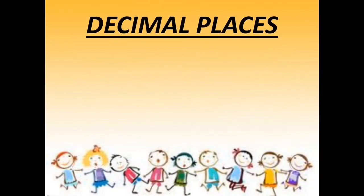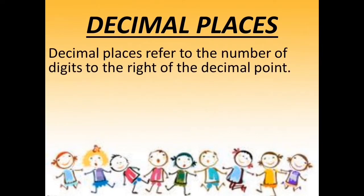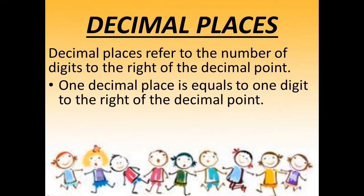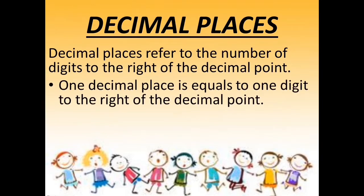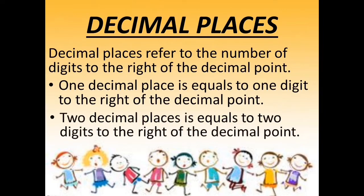Next is decimal places. Decimal places refer to the number of digits to the right of the decimal point. One decimal place is equal to 1 digit to the right of the decimal point, and 2 decimal places is equal to 2 digits to the right of the decimal point, and so on.